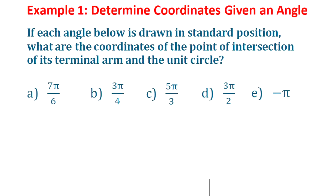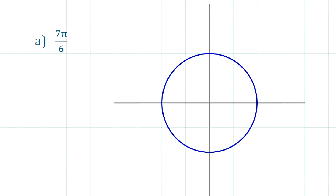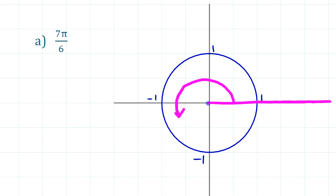If each of those angles are drawn in standard position, what are the coordinates of the point where the unit circle and the terminal arm intersect? Let's look at the first one: 7π/6. On this grid, two squares equal one unit, so the unit circle fits here. 7π/6 gets us halfway around (6π/6) plus a little further, so the terminal arm ends up in the third quadrant. We want the coordinates of that intersection point and will use a special triangle.